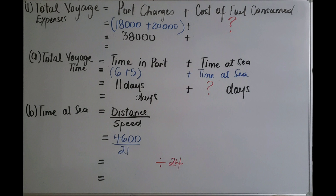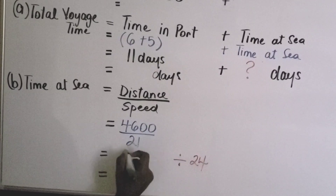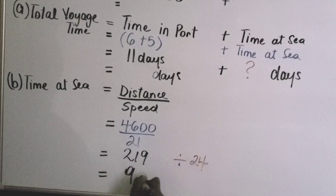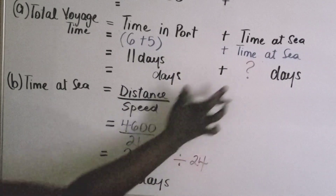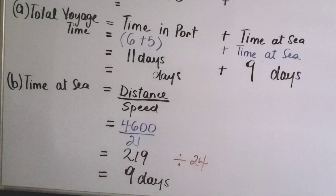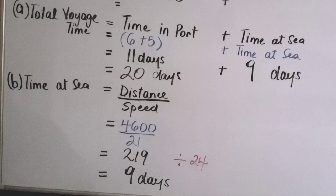To find the time at sea, it is distance over speed — 4,600 nautical miles divided by 21 knots — which gives 219 hours. Dividing 219 by 24 gives us 9 days at sea. So the total voyage time is 11 days in port plus 9 days at sea, equalling 20 days.